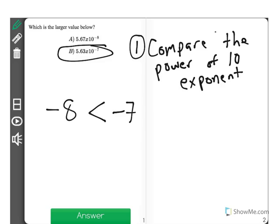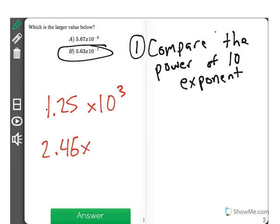But let's say you have something different. Maybe you have an example, maybe it's like 1.25 times 10 to the third, or 2.46 times 10 to the third. If they both have the same exact exponent, 3 and 3...